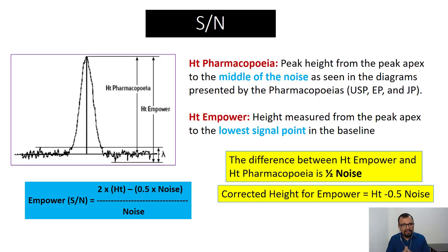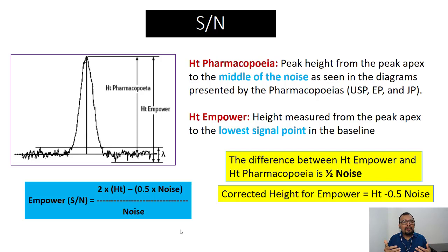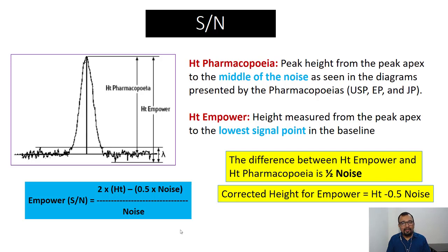You need to correct for this by subtracting one-half of the noise height. If lambda is the complete noise height, then 0.5 × lambda becomes the half noise. Substituting the correct figures: Empower S/N = 2 × (H_empower − 0.5 × noise) divided by the noise value. This correction yields the correct signal to noise ratio equation expected by USP, EP, and JP pharmacopoeias. Also find out how Chromeleon calculates the signal to noise ratio if you are using that software. Thank you very much for watching the video — I will meet you soon with more useful and informative videos. Take care and bye.